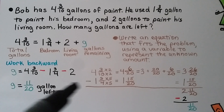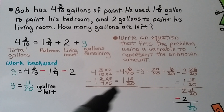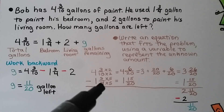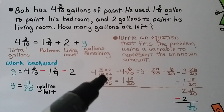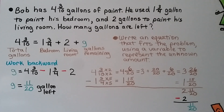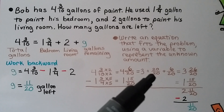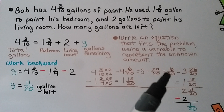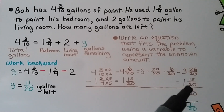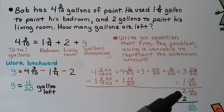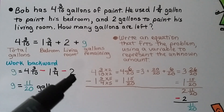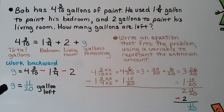We start with 4 and 3 tenths minus 1 and 3 fourths. We give them a common denominator — 4 and 10 can meet at 20. Multiplying: 3 tenths becomes 6 twentieths, and 3 fourths becomes 15 twentieths. We have 4 and 6 twentieths minus 1 and 15 twentieths. Since 6 isn't large enough to subtract 15, we rename 4 as 3 and 20 twentieths, then group with 6 twentieths to get 26 twentieths. 26 minus 15 is 11, and 3 minus 1 is 2, giving us 2 and 11 twentieths. Then we subtract the 2 gallons for the living room: 2 and 11 twentieths minus 2 equals 11 twentieths. So g, the gallons remaining, equals 11 twentieths.